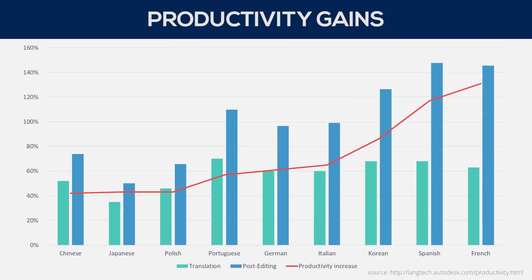This graph from Autodesk shows a real-life example of the productivity gains for various languages. As you can see, gains can reach as high as 130% for certain languages.